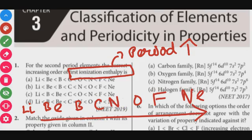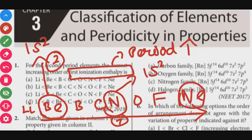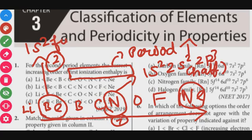The trend is exhibited by beryllium, nitrogen, and neon — they are completely filled or half filled. Beryllium configuration is 1s2. Nitrogen is atomic number 7, so 7 electrons: 1s2, 2s2, 2p3. This is half filled. And beryllium is fully filled.